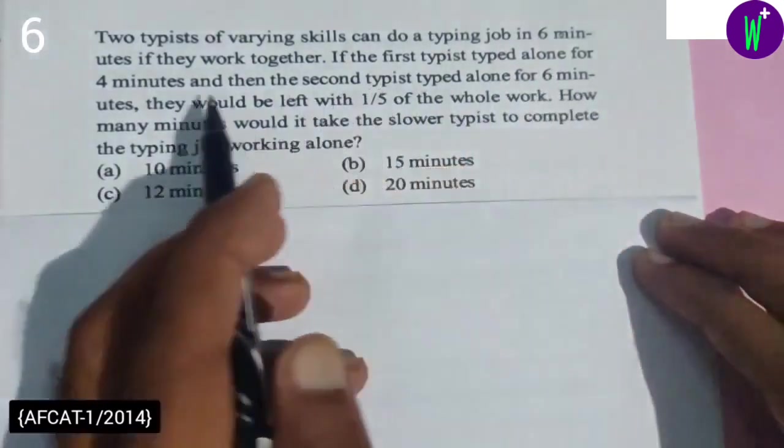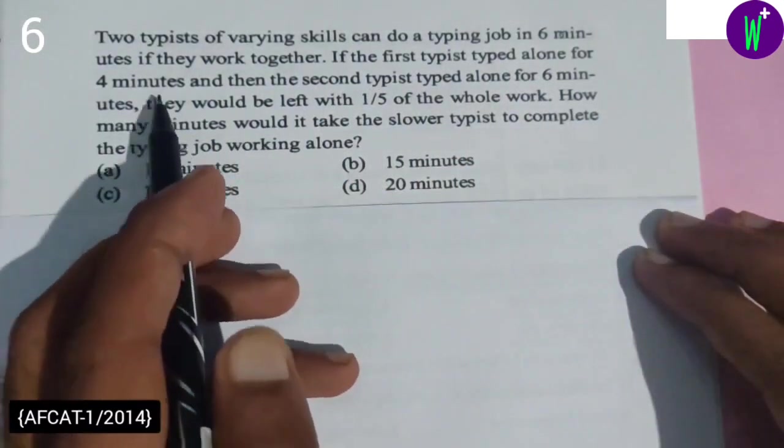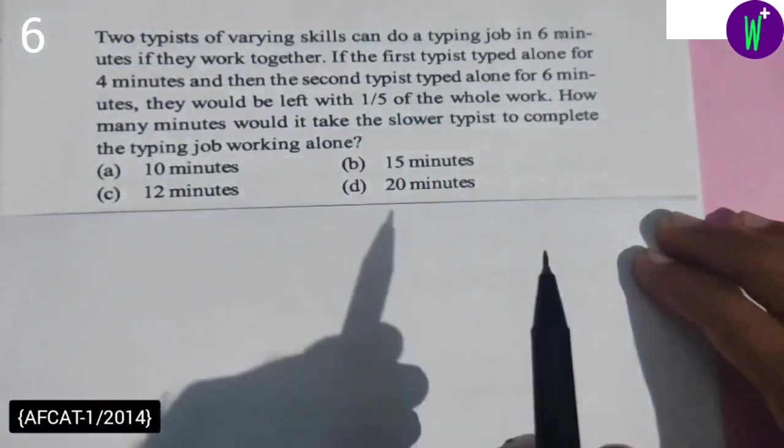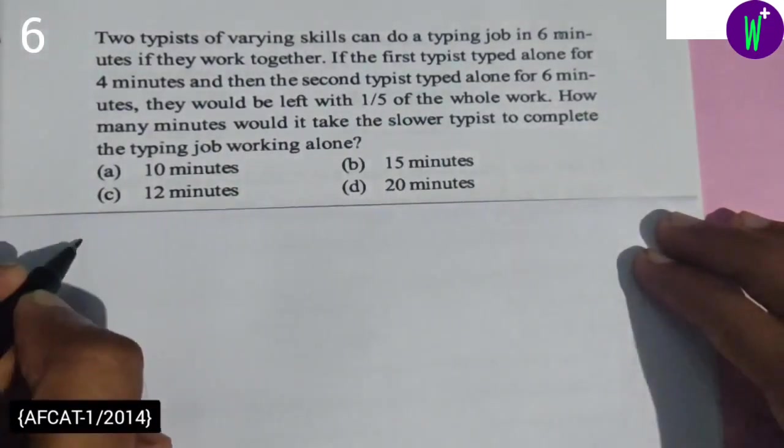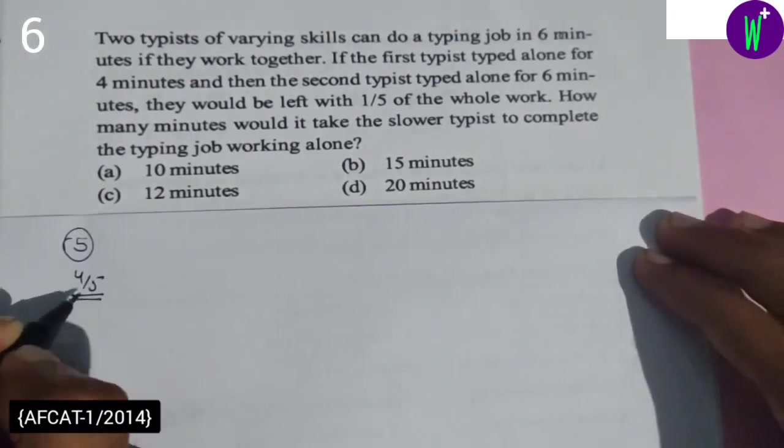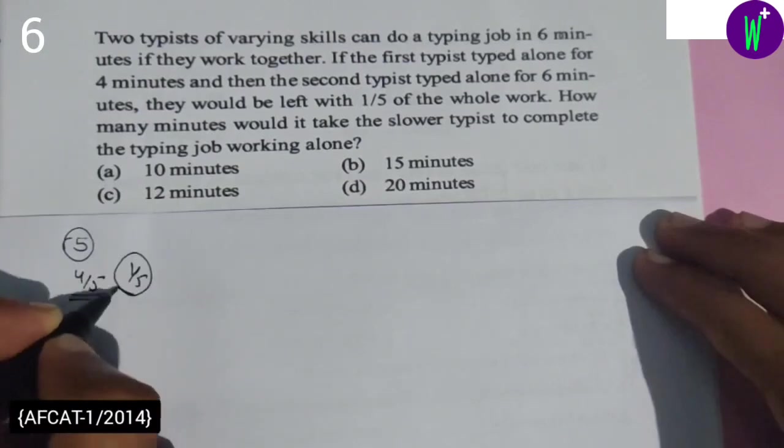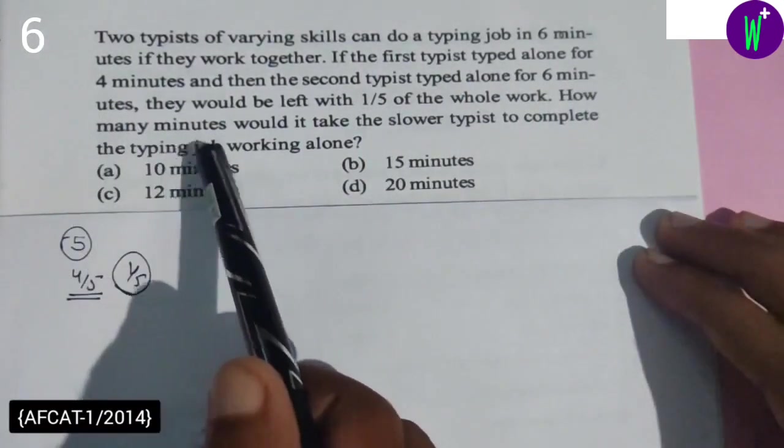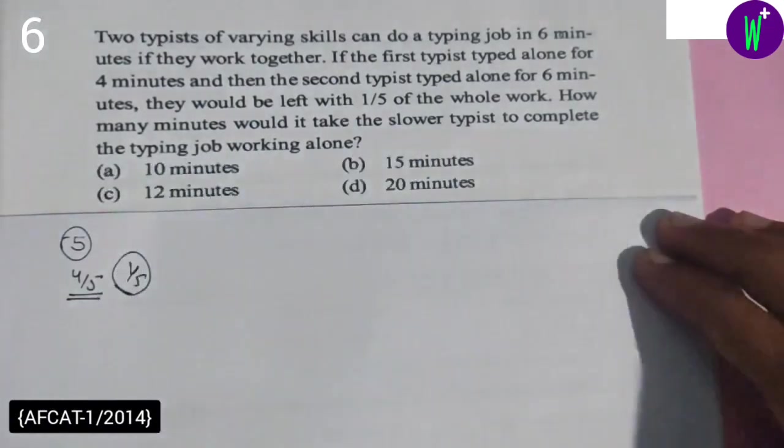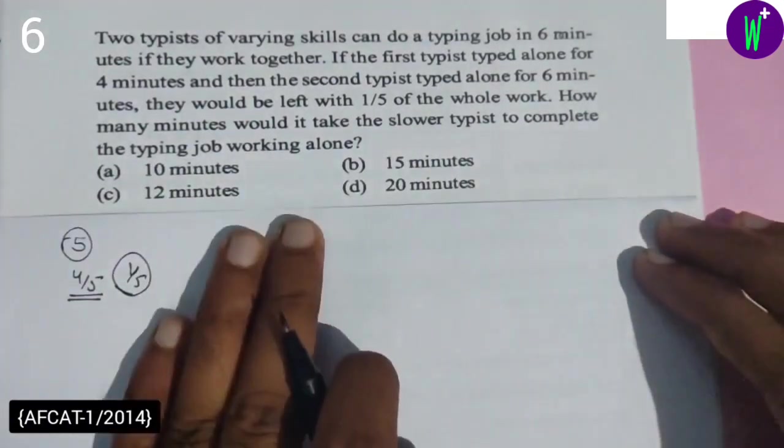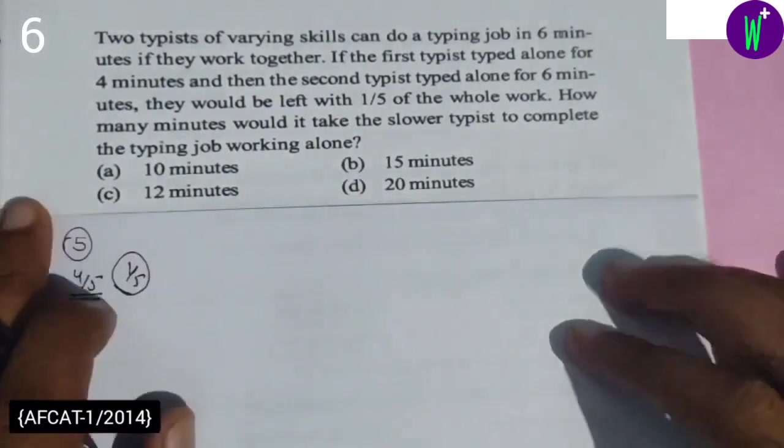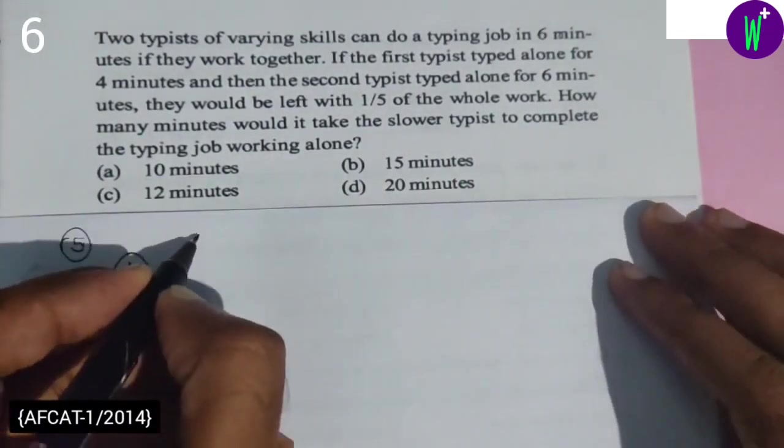If the first typist is in four minutes and then six minutes from the second typist, they leave one by five to complete. The total time of five to four by five to work together, left to remain one by five. How many minutes would it take the slower typist to complete the typing job working alone?